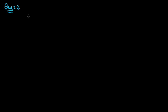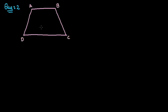Now we will take our second problem. Our second problem is related to a trapezium. A trapezium is a quadrilateral whose one pair of opposite sides is parallel. In this problem we have a trapezium ABCD in which side AB is parallel to CD. In this trapezium, we join the diagonals BD and AC, so this area is marked as area P and this area is marked as area Q. The problem is we have to find the area of the complete trapezium in terms of P and Q. For solving the problem we mark the intersection point as O.